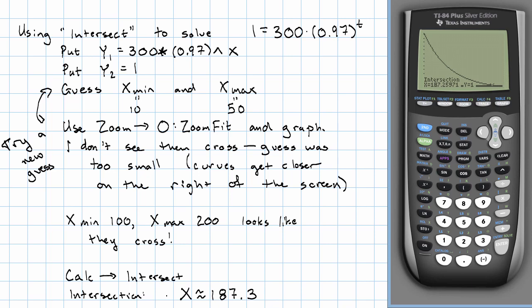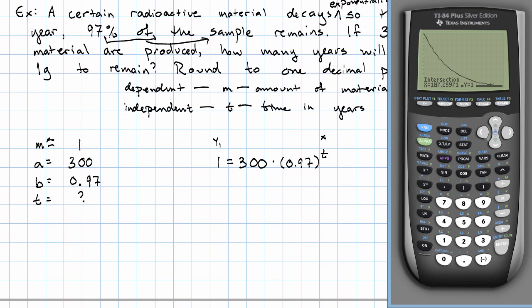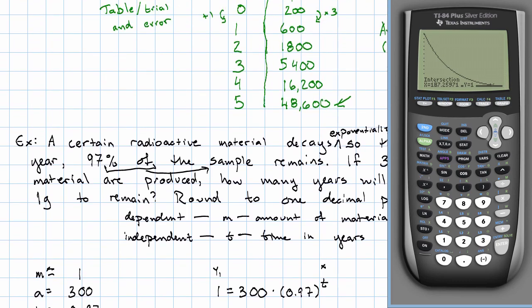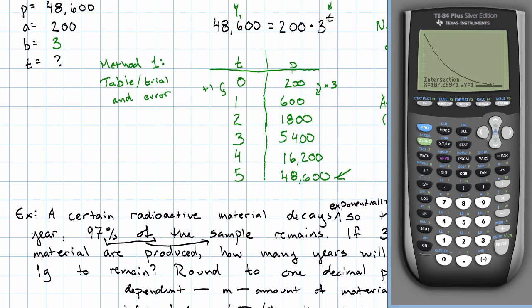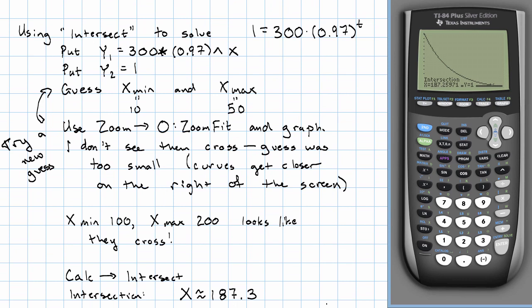So what does that give me? In answer to my question, 187.3 years. So again, if we want to find the exponent, we have two options. We can make a table and use trial and error. Or we can use the Intersect feature on the calculator. Take care.